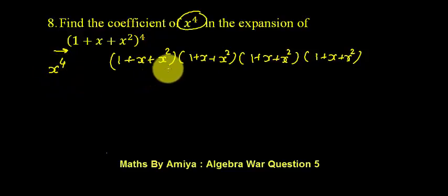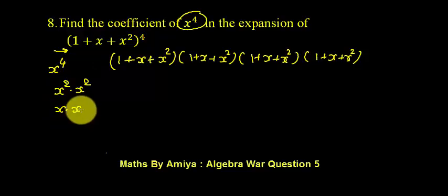So we have to make x^4. How can we make x^4 when the maximum power of x is 2? One method is x² into x². Another method is x into x into x². Another method is x into x into x into x.